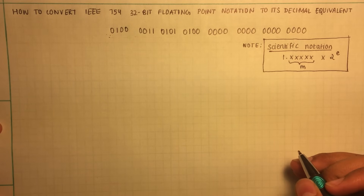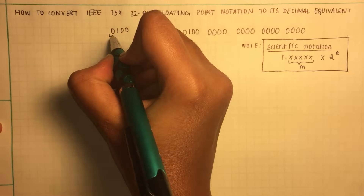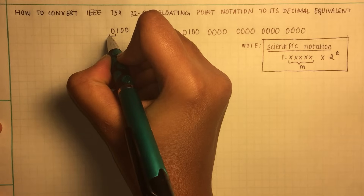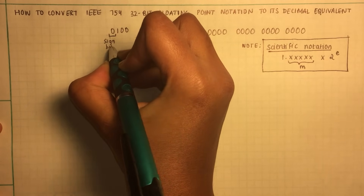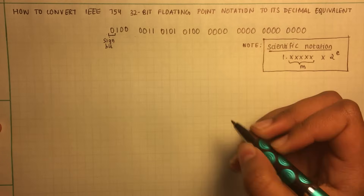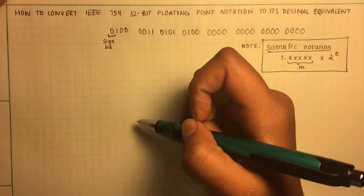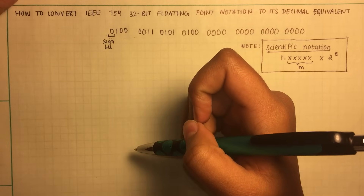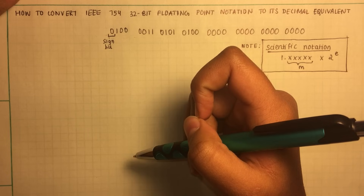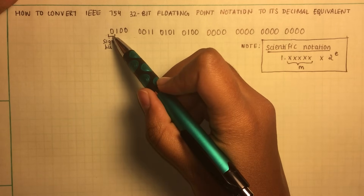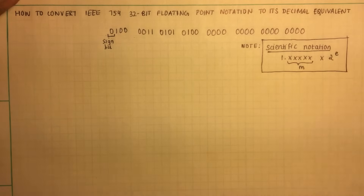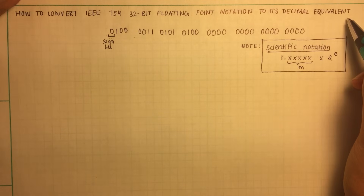IEEE 754 format states that the first bit is the sign bit. And this tells us whether the decimal equivalent would be a positive or a negative number. And since it's a zero, we can conclude that our decimal equivalent would be positive.